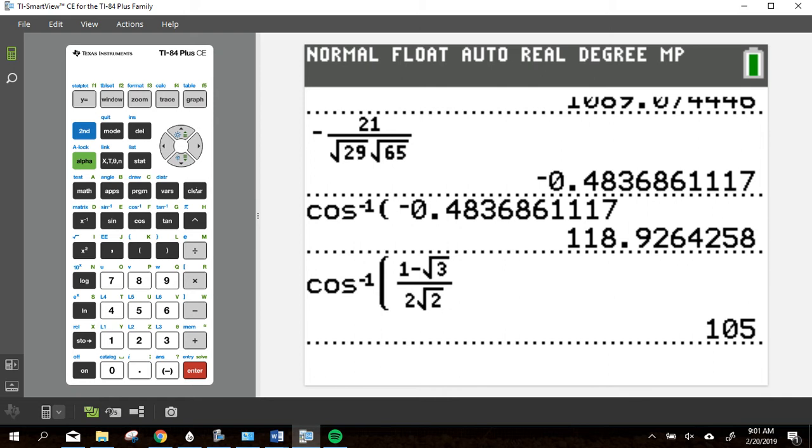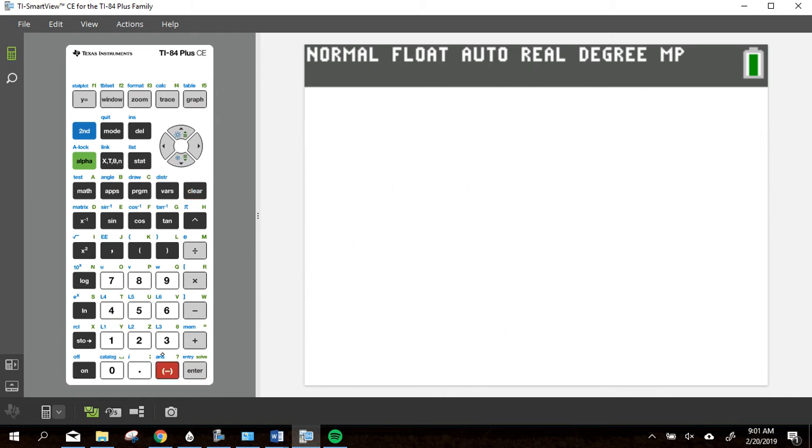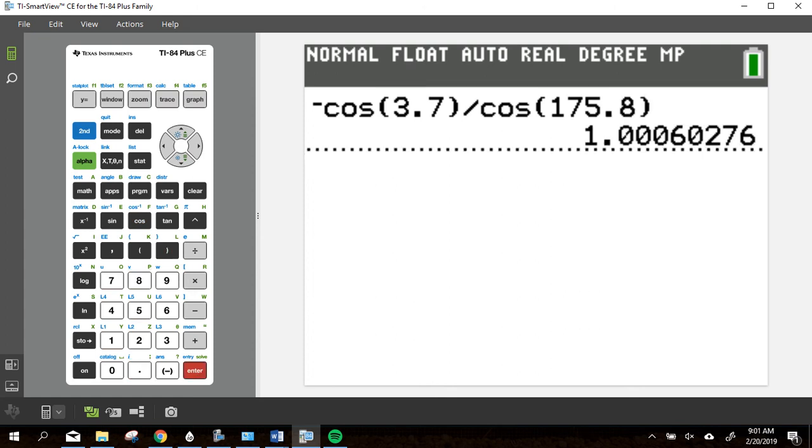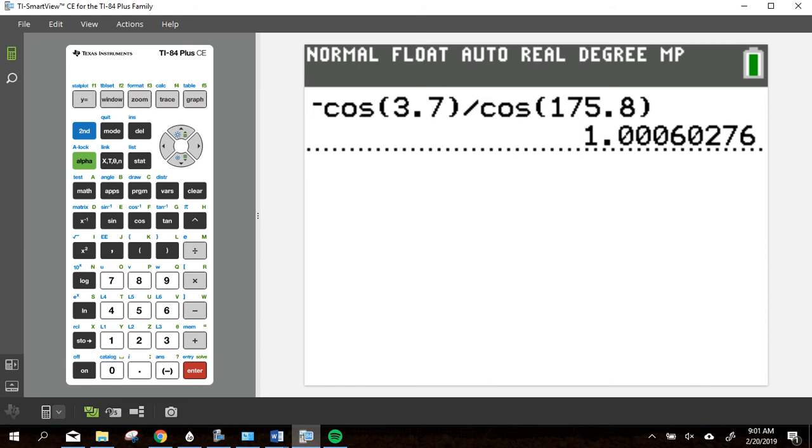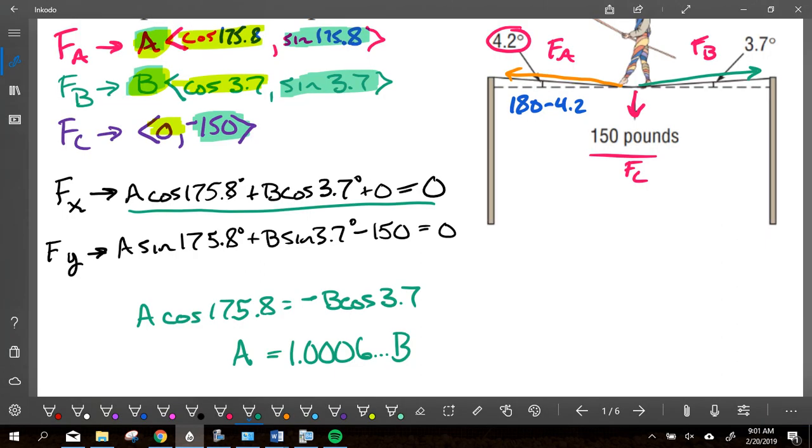So in my calculator, making sure my calculator is in degrees, I'm taking negative cosine 3.7 and dividing by cosine of 175.8. I type that in. I hit enter. I get that number right there, 1.0006. So A is going to be equal to 1.0006 B. I don't want to round it. I'm not to the end of my answer here. So I'm not going to round it. And so if you remember, we've done this in the past, I'm going to save that answer as the letter B. And so if you remember, we have this store button right here. I use that store button. I'm going to save it as the letter B because that's the coefficient that goes with B. Now anytime I hit the letter B, it's going to come up.